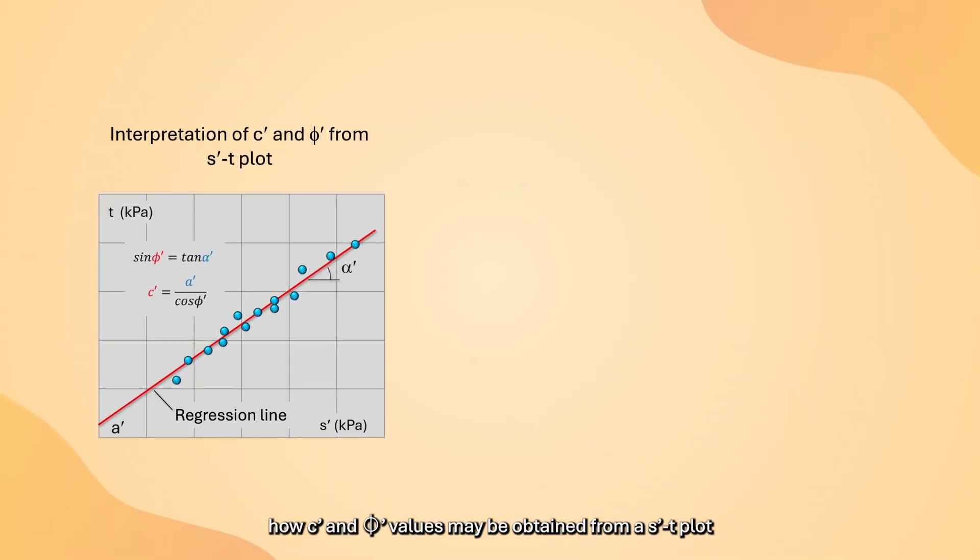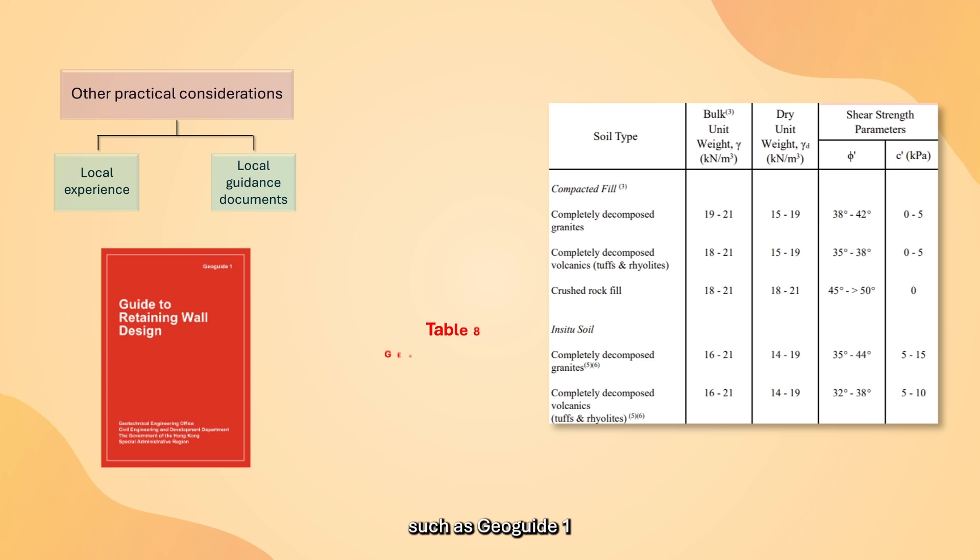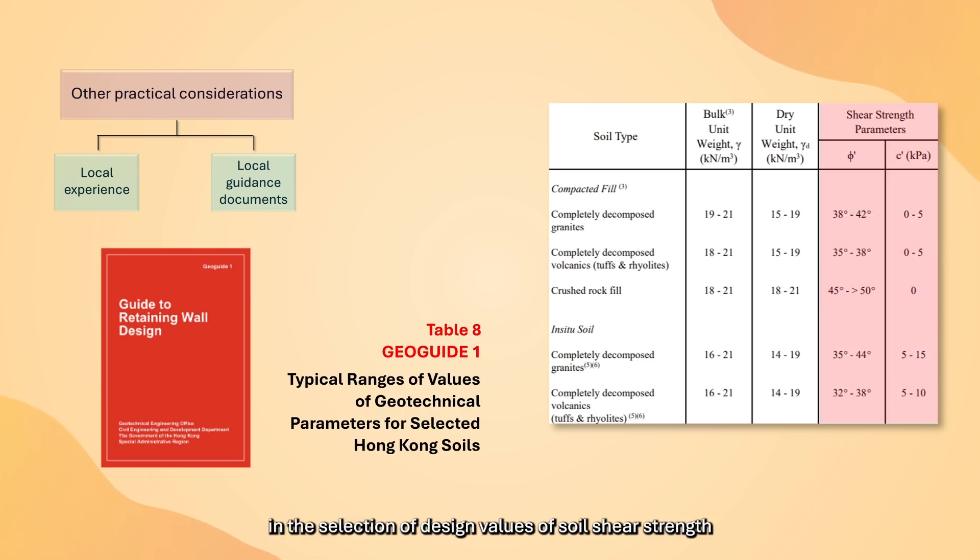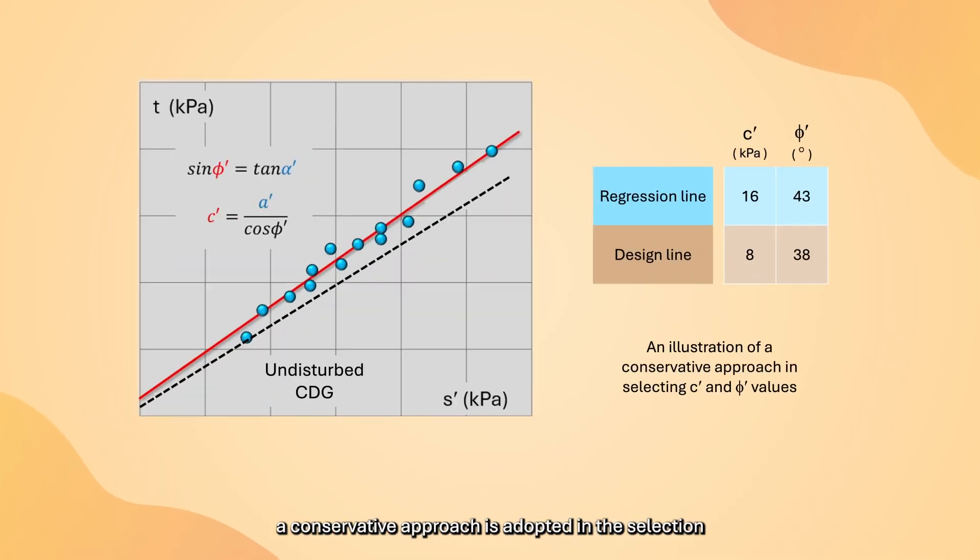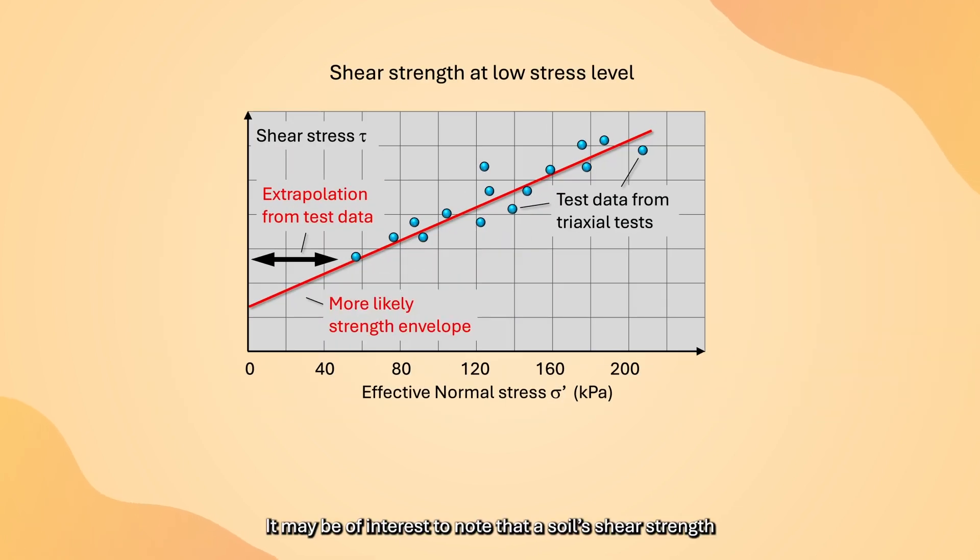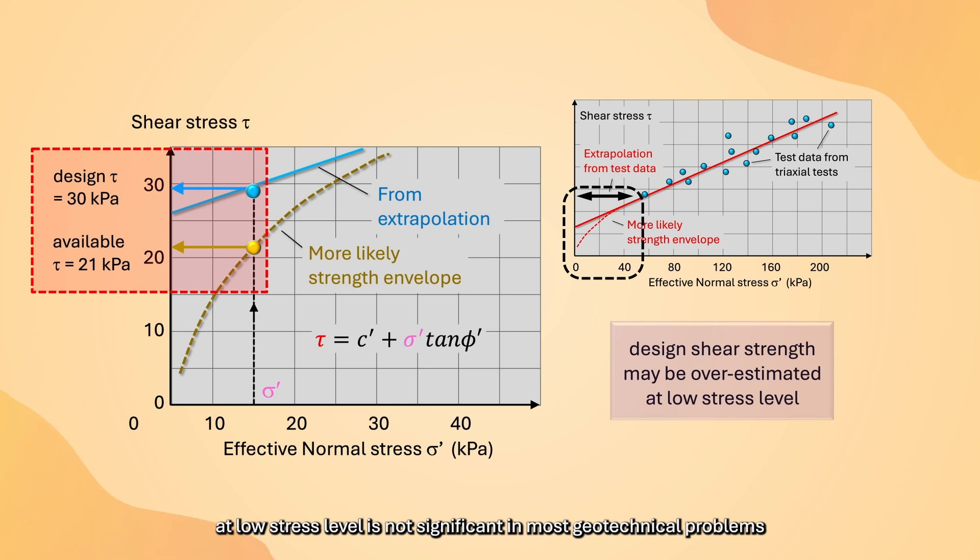We have just shown how C' and φ' values may be obtained from a ST plot. In practice, the designer should take into account local experience and the typical values and considerations given in local guidance documents such as GeoGuide 1 in the selection of design values of soil's shear strength. As illustrated in the figure here, a conservative approach is adopted in the selection of the design values of C' and φ'. It may be of interest to note that a soil's shear strength at low stress level is often overestimated in the use of the best fit line approach. Notwithstanding this, the consequence of overestimation of shear strength at low stress level is not significant in most geotechnical problems.